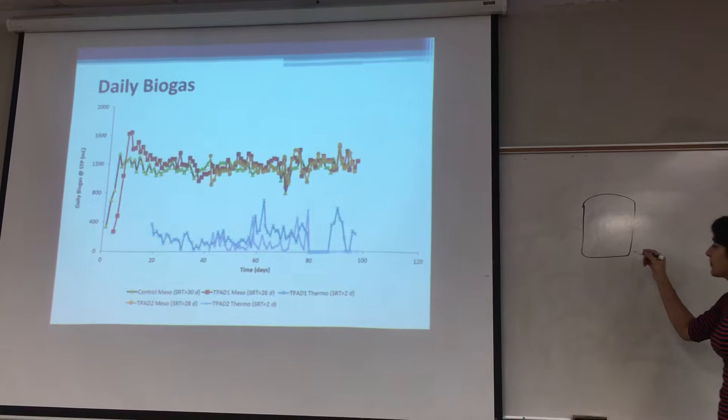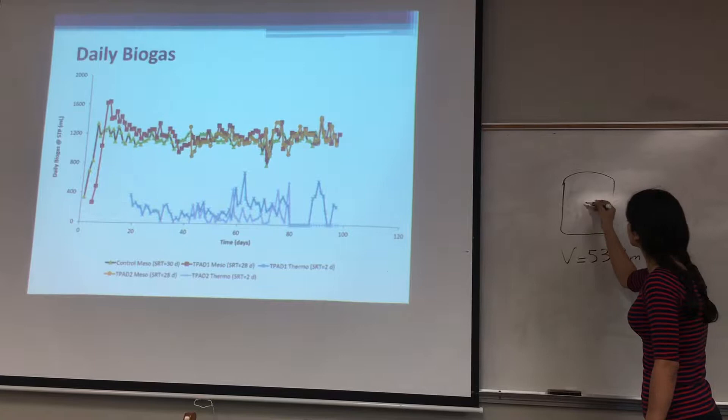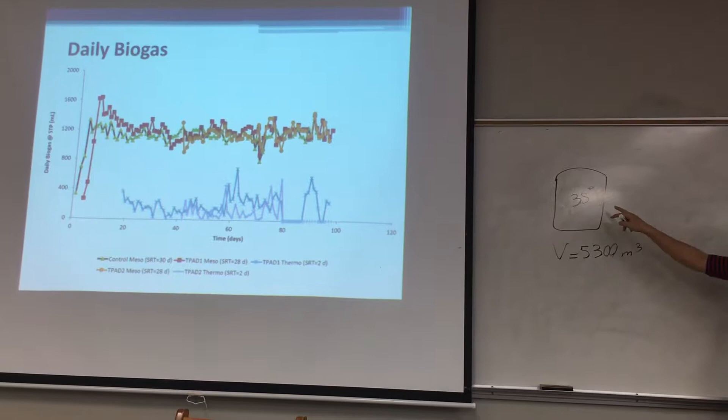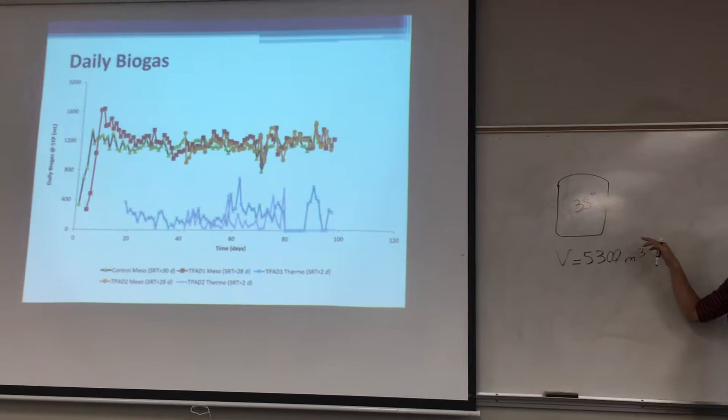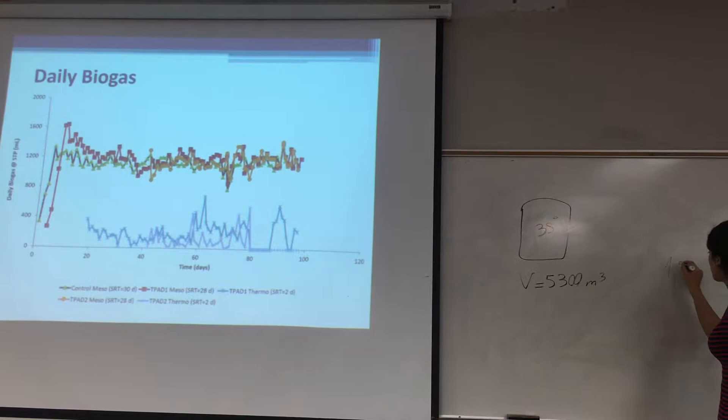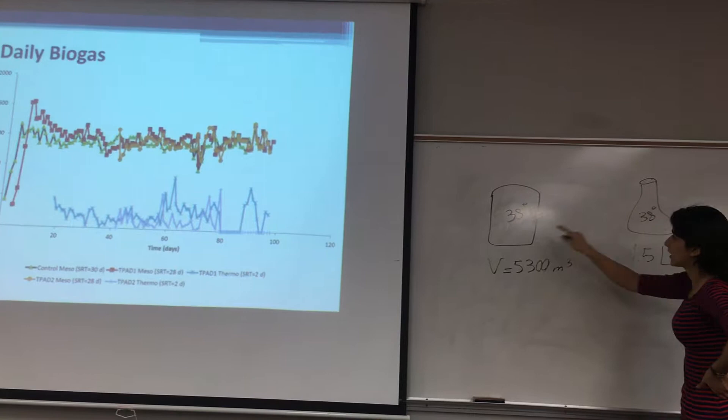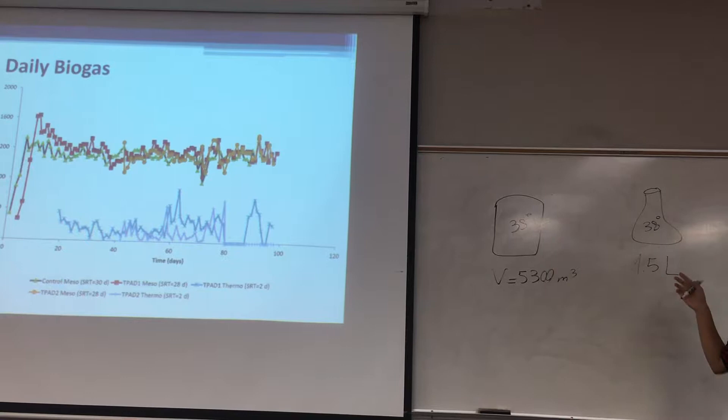Currently in Lulu Island they have a single stage anaerobic digester. The current volume is 5300 cubic meters, and the temperature is 38 degrees. So we are trying to make a similar one as our control digester. We have a 2 liter flask as a digester with a volume of 1.5 liters. We use the same temperature, 38 degrees, and the SRT is 31 days at Lulu Island, so we are using 30 days as our SRT.